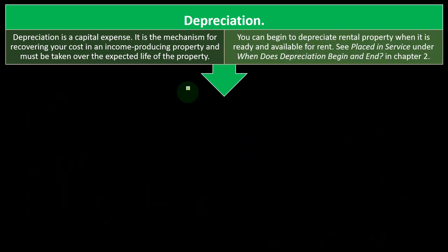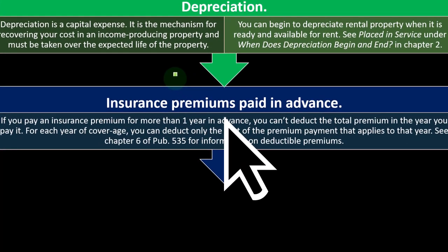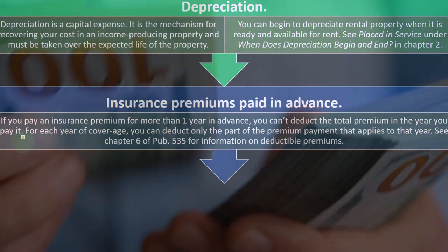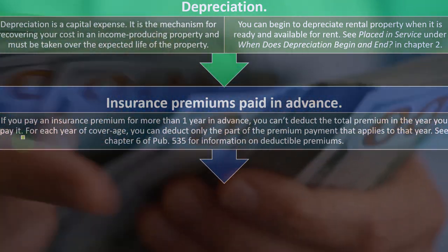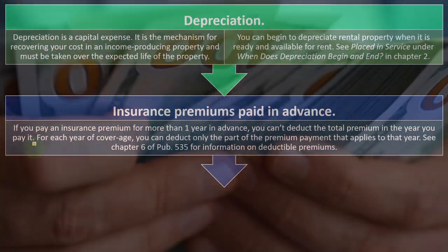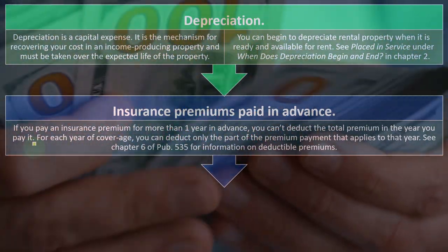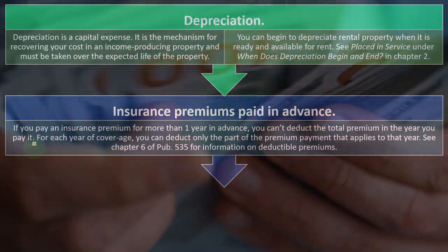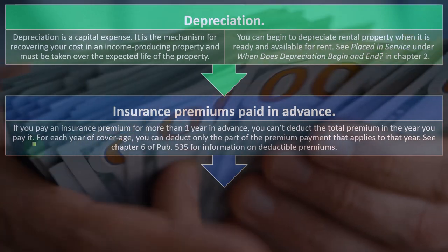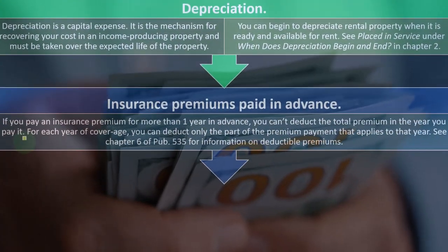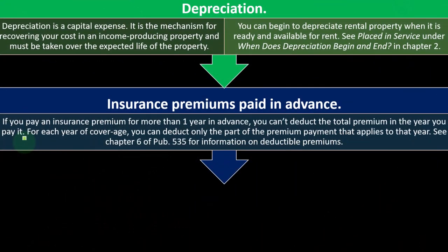You can begin depreciation on rental property when it is ready and available for rent—see 'placed in service' under when depreciation begins and ends in chapter two. For insurance premiums paid in advance: if you pay an insurance premium for more than one year in advance, you can't deduct the total premium in the year you pay it. For each year of coverage, you can deduct only the part of the premium payment that applies to that year. See chapter six of Publication 535 for information on deductible premiums.